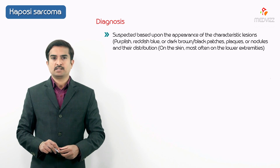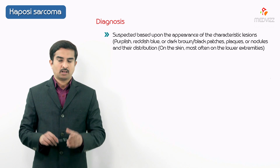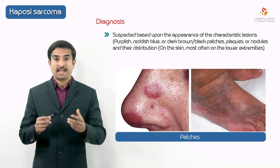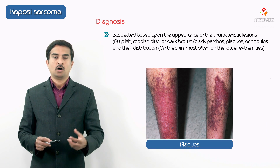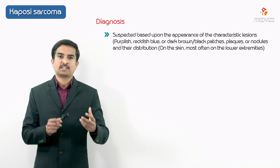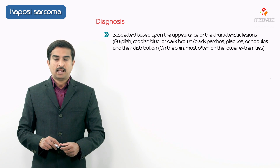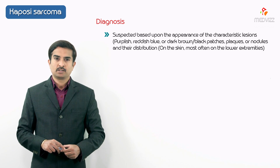The diagnosis of classic Kaposi sarcoma is generally suspected based upon the appearance of the characteristic lesions — whether the lesions are purplish, reddish-blue, or dark brown or black patches, or categorized as plaques or nodules. They are also classified according to their distribution, with lesions most often located on the lower extremities.